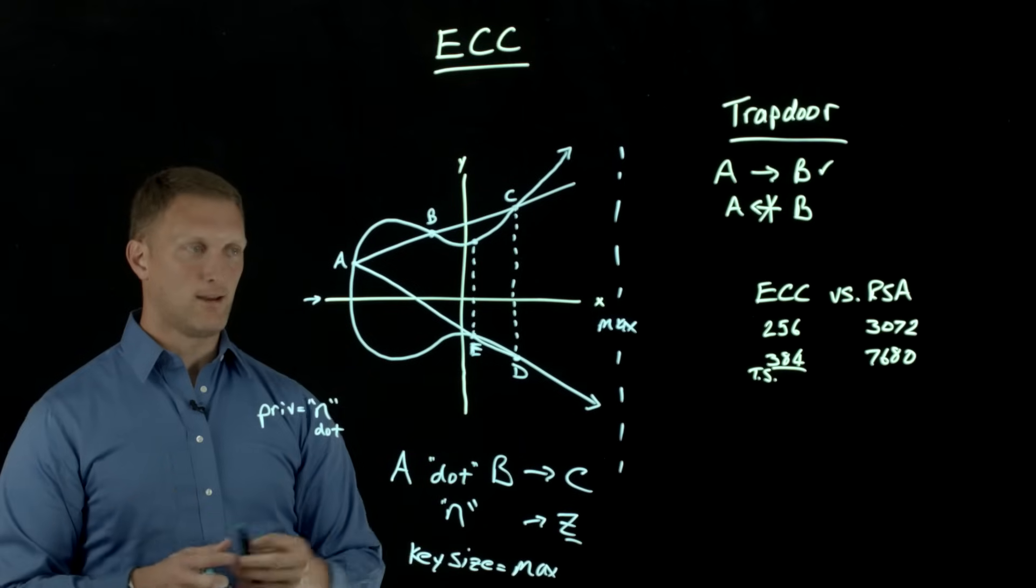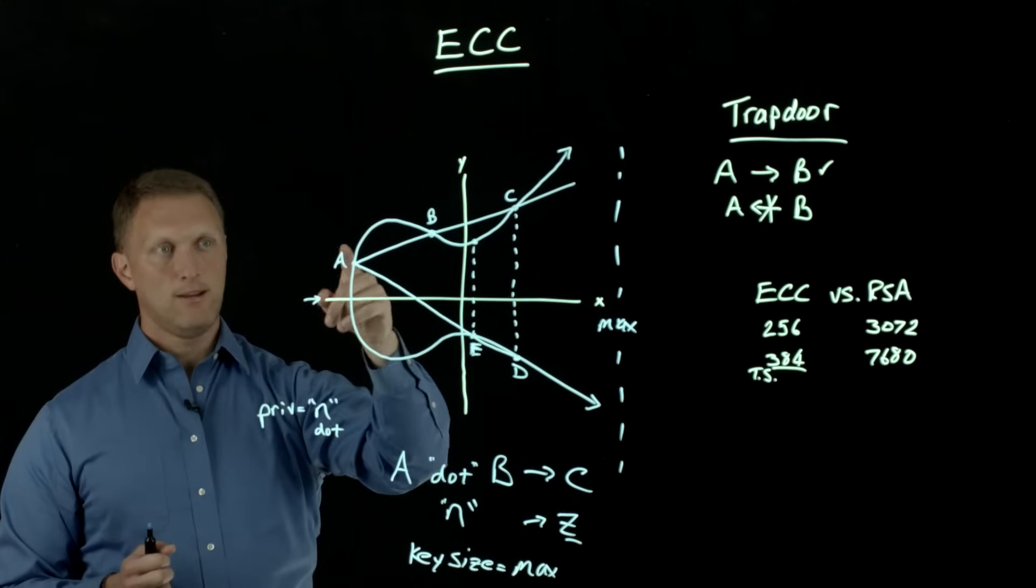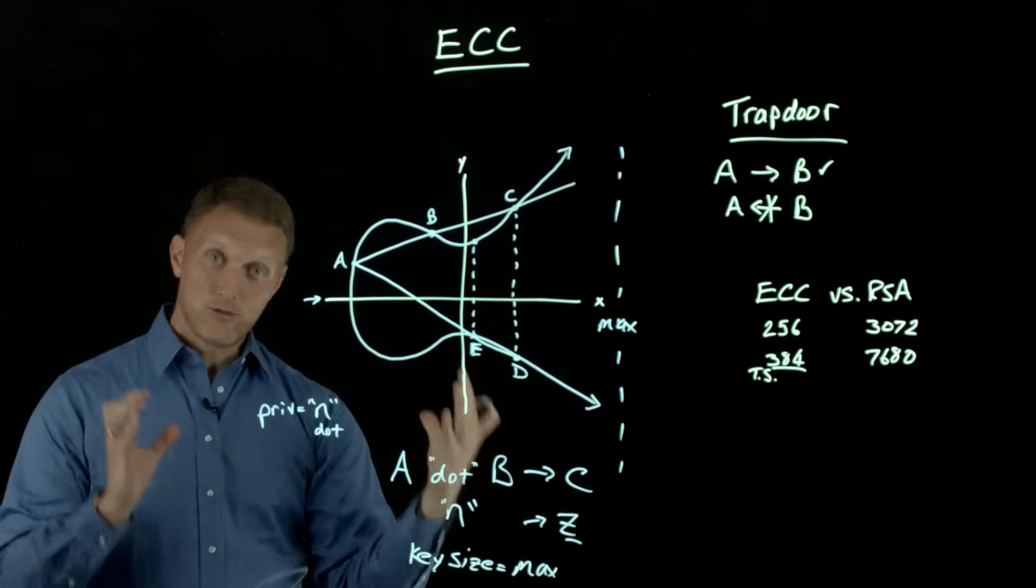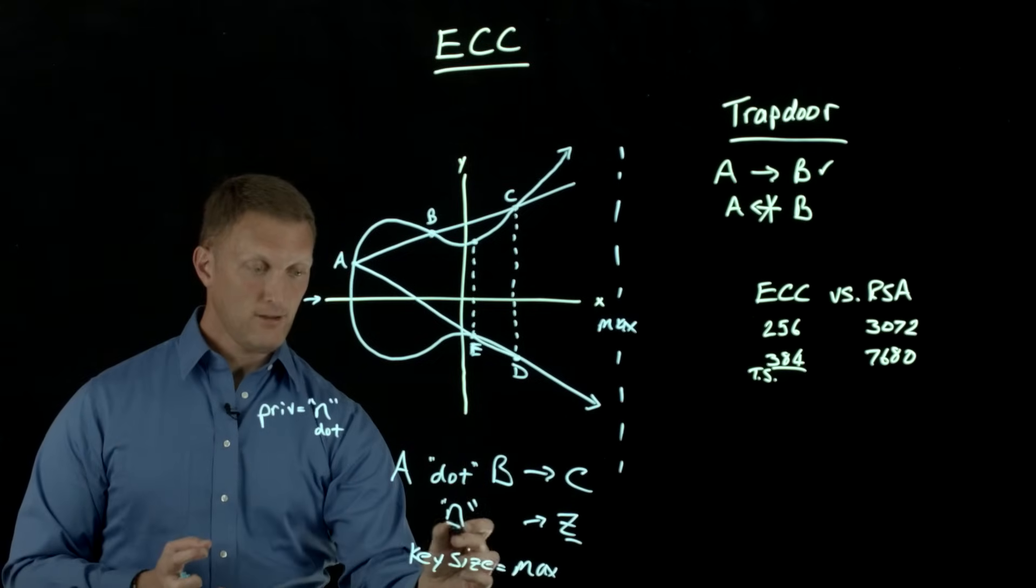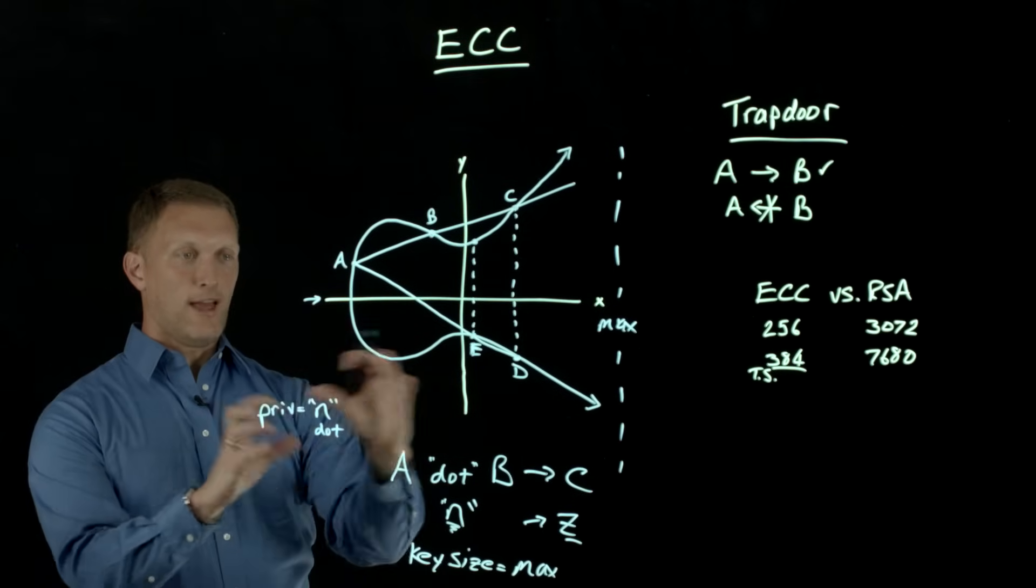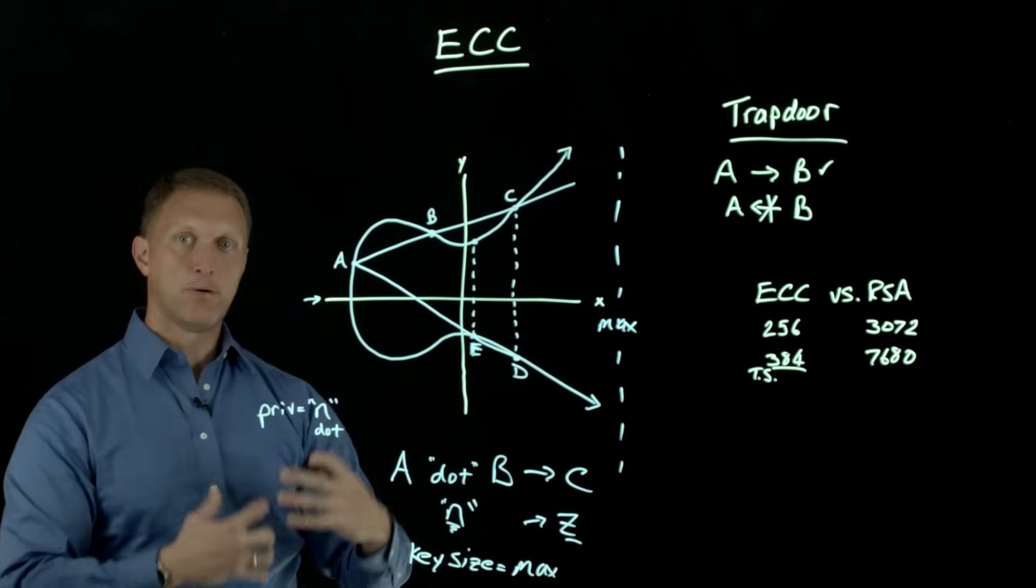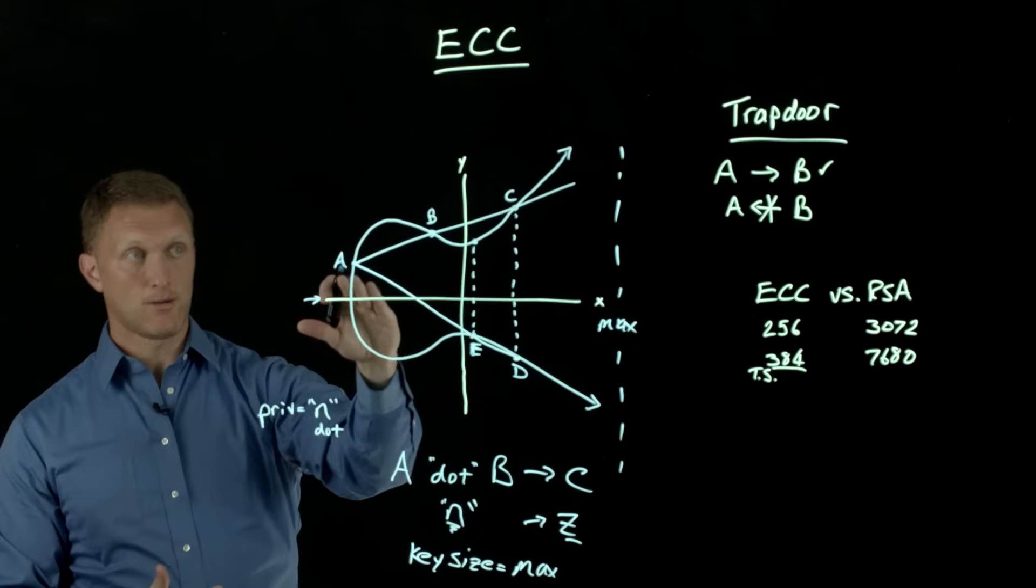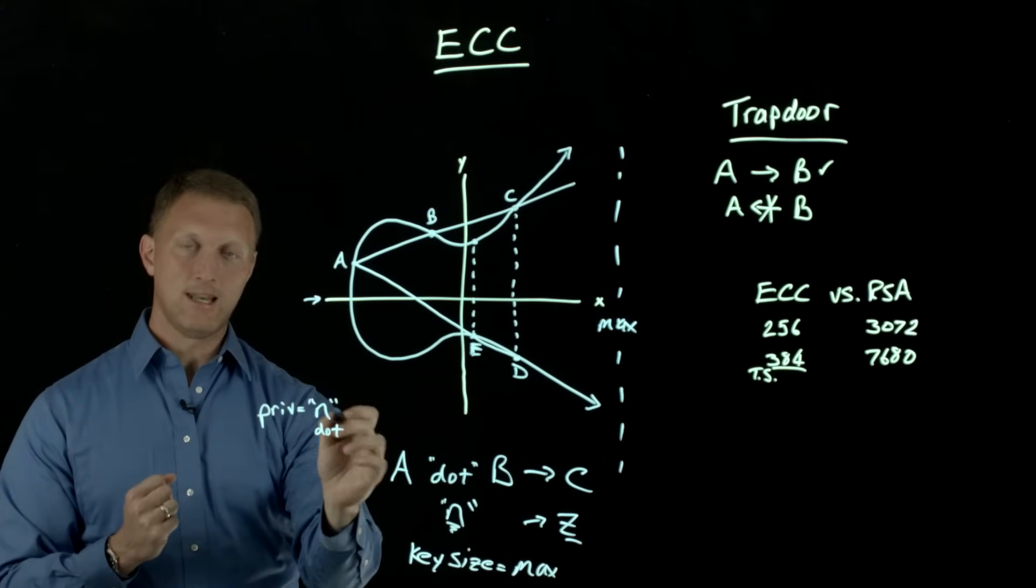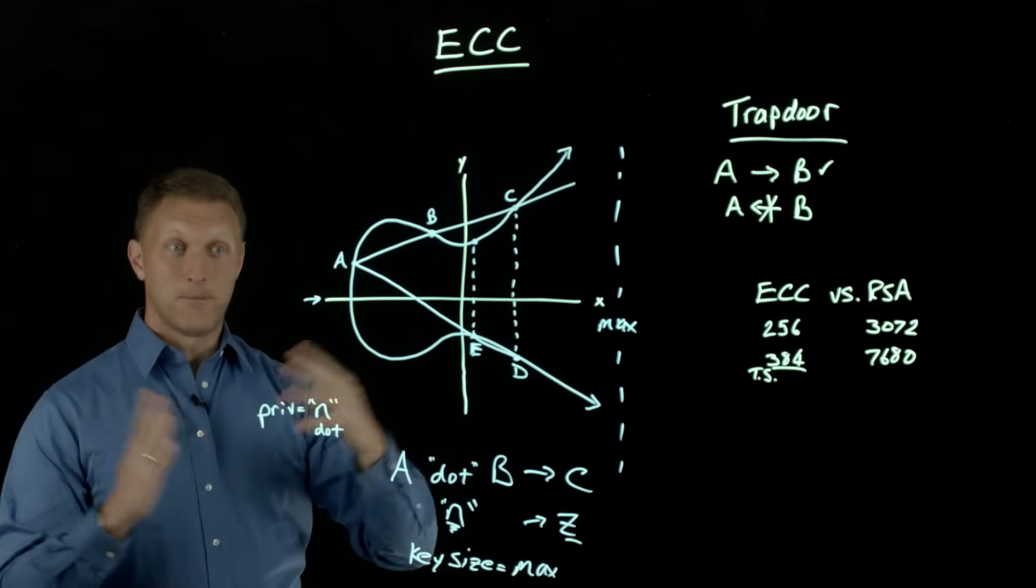And as it turns out, it's kind of interesting because if you are given the actual curve itself, the function that defines this curve, and if you're given the starting point, as well as the end point on the curve, the Z point, as it turns out, it's extremely difficult to find out this number for N, the actual number of times that you've dotted the function with itself to get to that point. And so that provides the basis for this trapdoor function to be able to say, Hey, I can give you out public information to everybody, the starting point, the actual function that defines the graph or the curve, but I'm going to keep some stuff private. And that is this N number of times that this function is dotted with itself. So that's kind of the basics behind it.